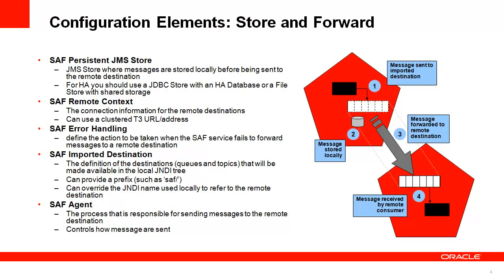There are several configuration elements for Store and Forward. First is the persistent JMS store — you can choose either a JDBC store or a file store, but a JDBC store gives you more of a highly available infrastructure and makes it easier to migrate messages from one server to another. There is also a Store and Forward remote context, which defines the URL used to connect and send messages. For this URL, you can use a cluster T3 URL or address, so you can send to a distributed destination on the remote server or cluster.